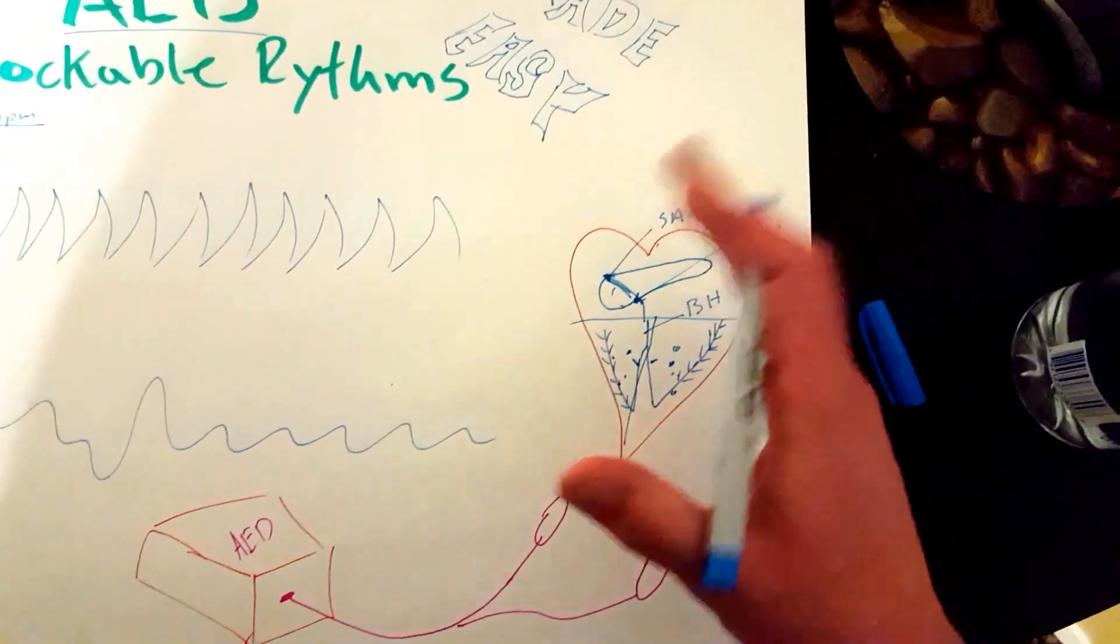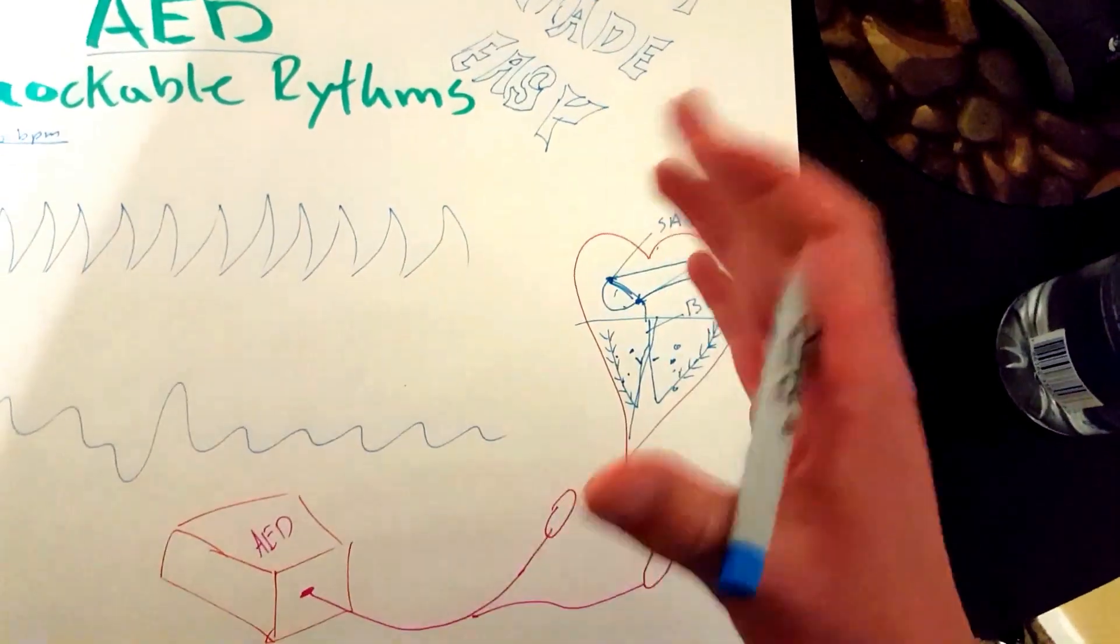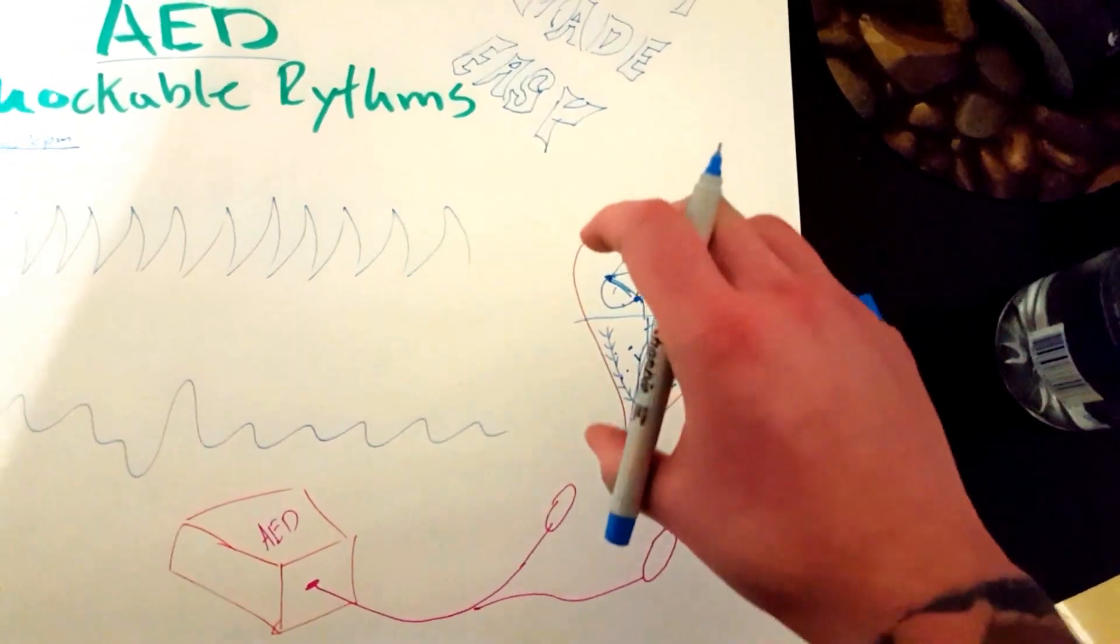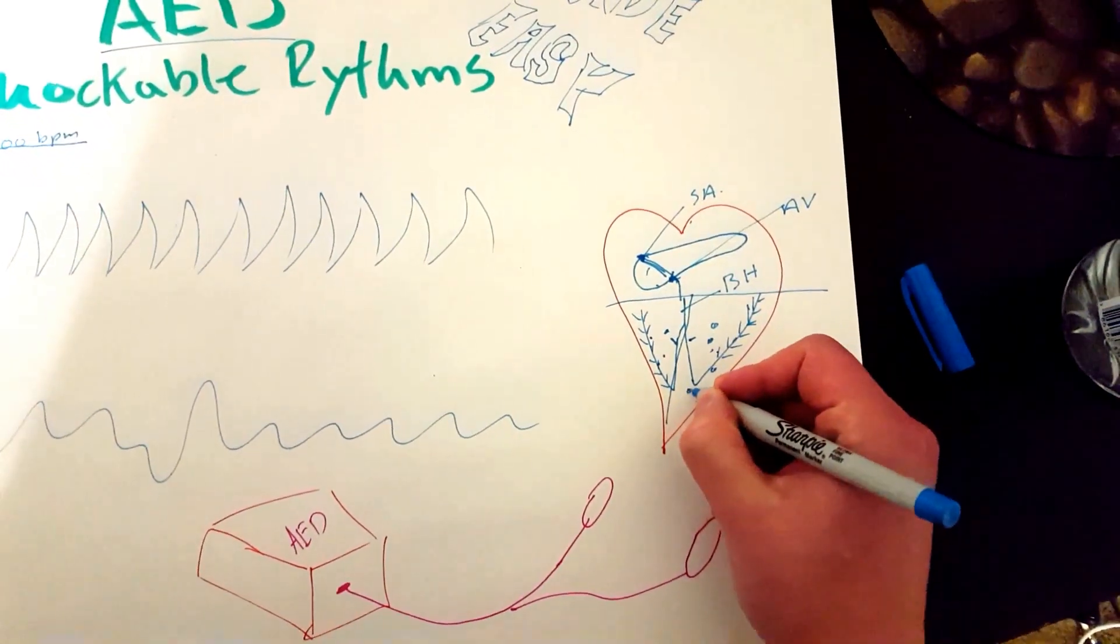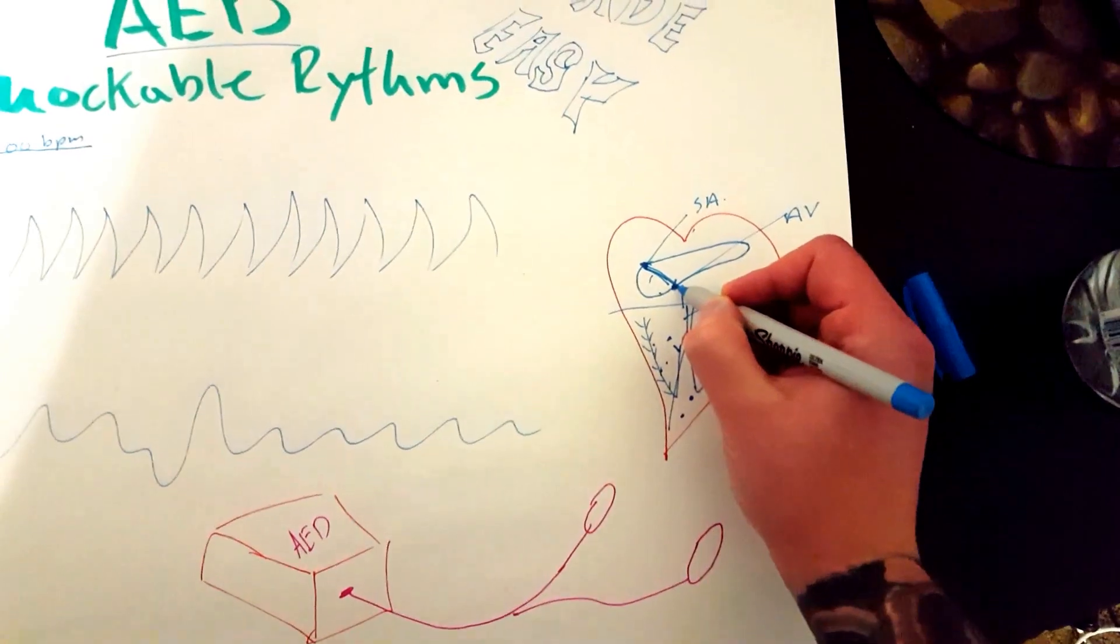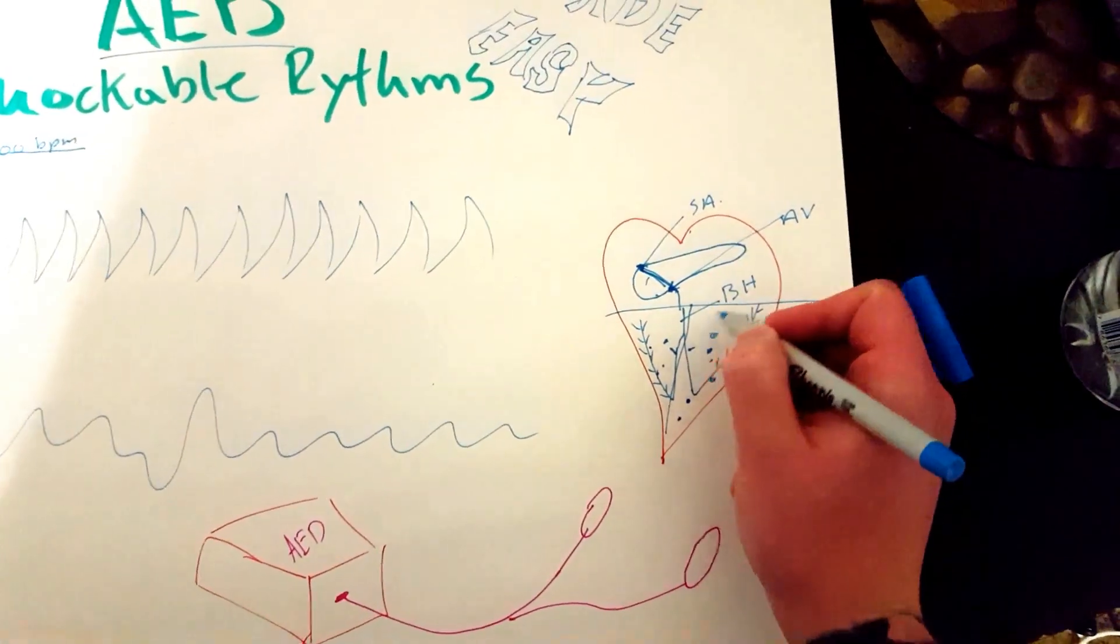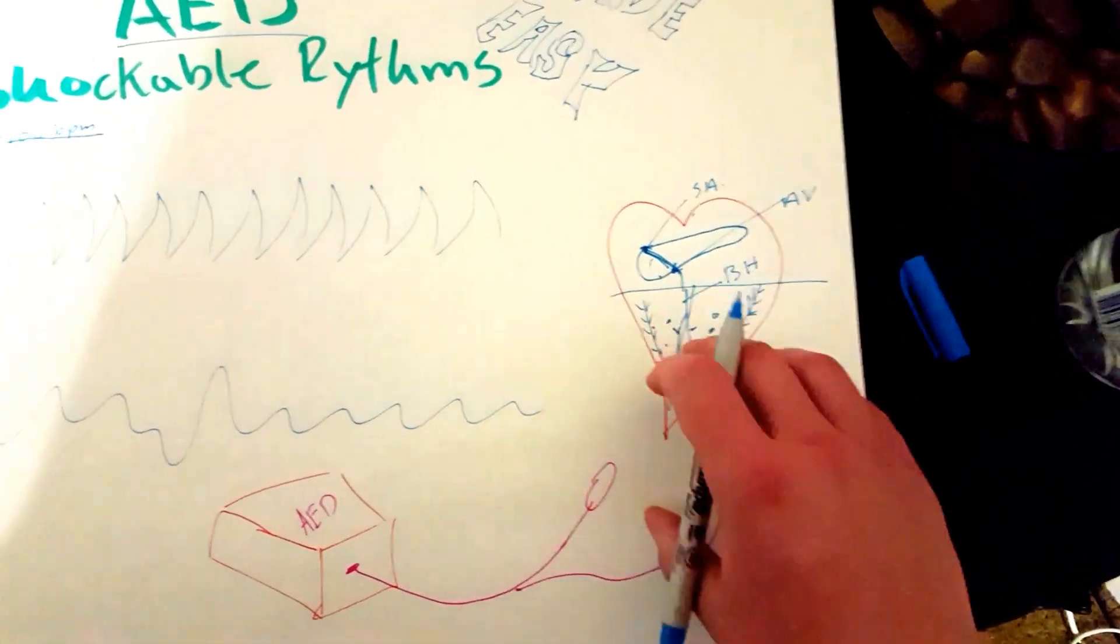But there's also other activity going on somewhere in the ventricles. And it could be for a number of things: hypoxia, tissue death, a whole bunch of stuff, hormone imbalance, who knows. But something is causing electricity to spark off by itself out here without waiting for the signal from the SA, AV, and bundle of His, and all this stuff up here. So it's just kind of doing its own thing.